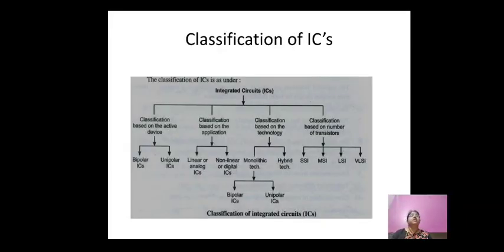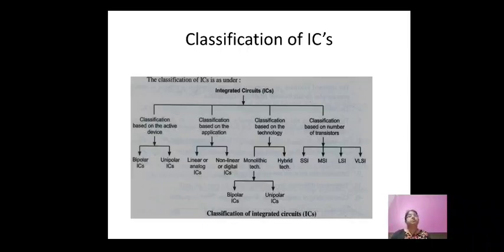Classification of ICs: ICs are classified into four main types. First, classification based on active devices — bipolar IC or unipolar IC. In bipolar ICs, transistors are used; in unipolar ICs, MOSFETs are used.